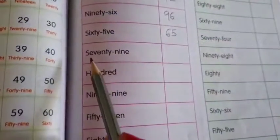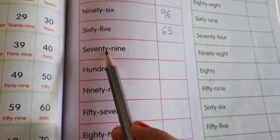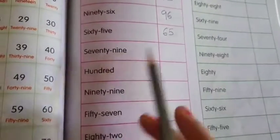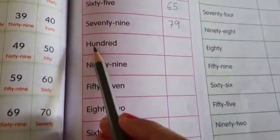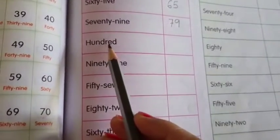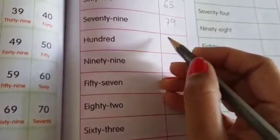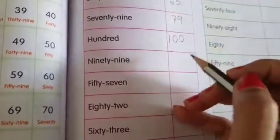Next, SIXTY 60 FIVE 5, 65. Next, SEVENTY 70 NINE 9, 79. HUNDRED. How you will write hundred? 1, 0, 0. 100.